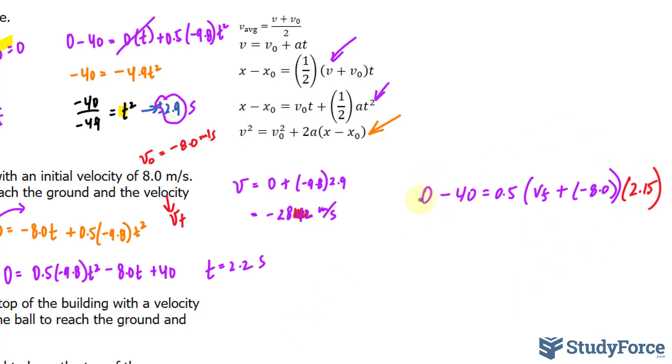Now let's solve this really quickly. There's no need for this 0. We have negative 40. And we're going to divide both sides of the equation by this factor to eliminate it on the right side. We get 0.5 times 2.15. And on the right side, we have v sub f minus 8.0. We will eventually take this term over.